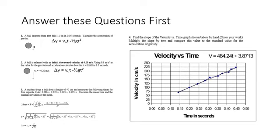In number 2, the ball is released with an initial downward velocity of 0.2 meters per second. Using 9.8 meters per second squared as the value for gravitational acceleration, calculate how far it will fall in one second. We're using the same equation, but now we're inputting gravity and solving for the displacement. The displacement, in this case, should be negative.